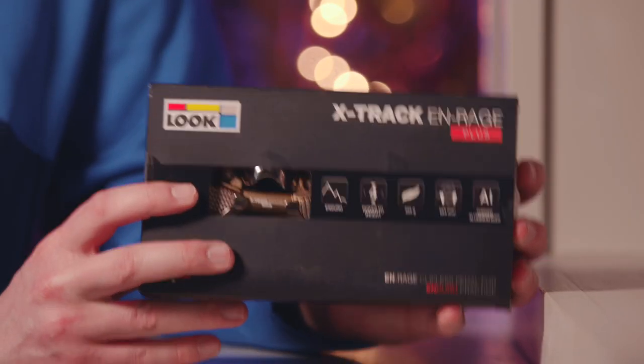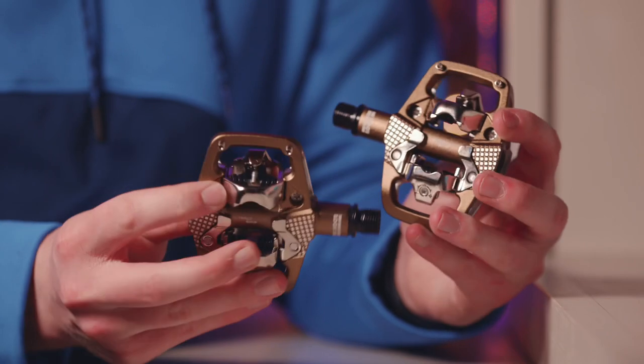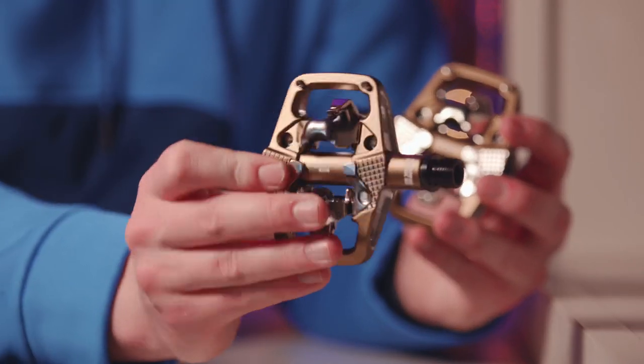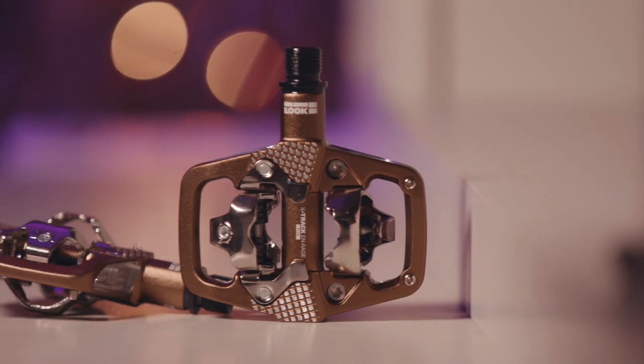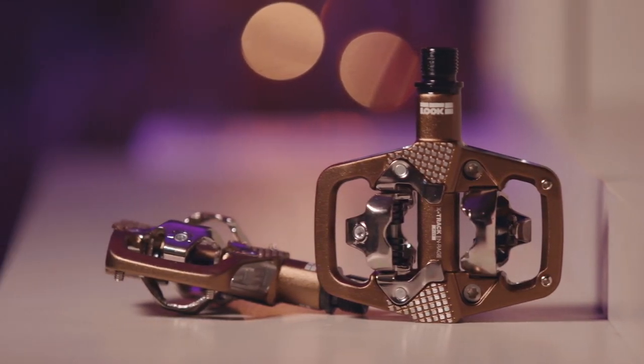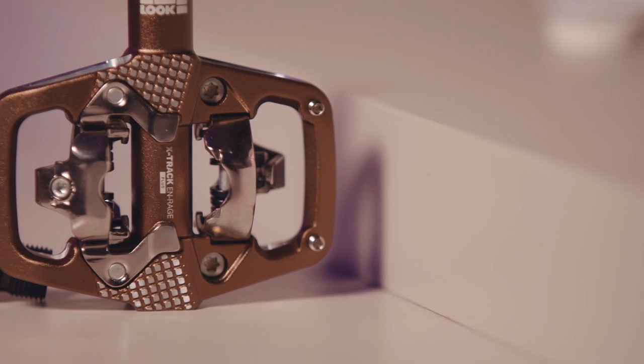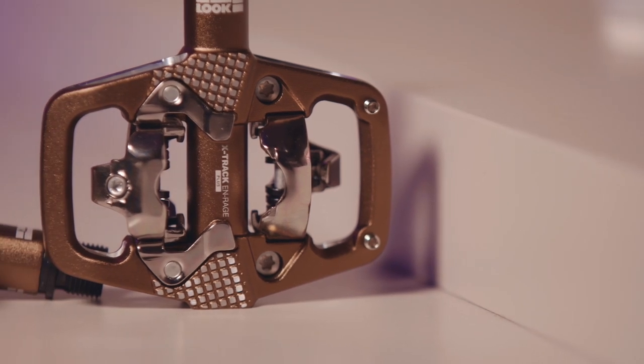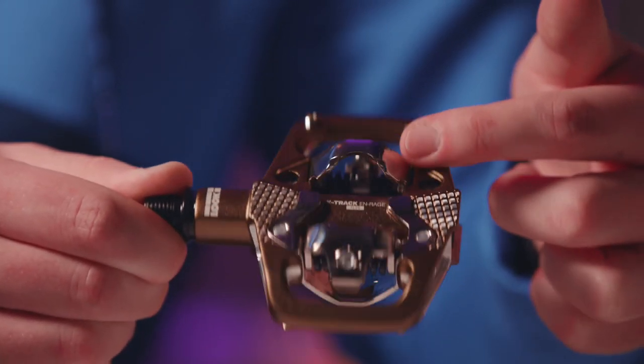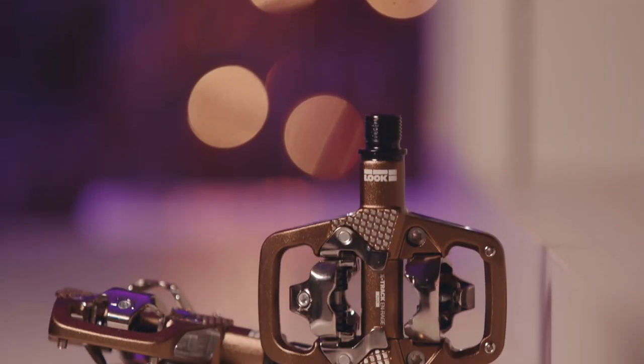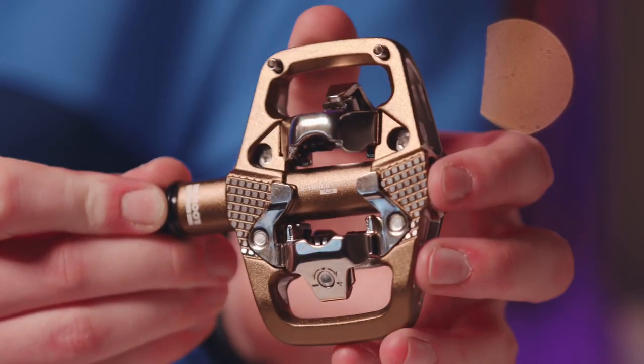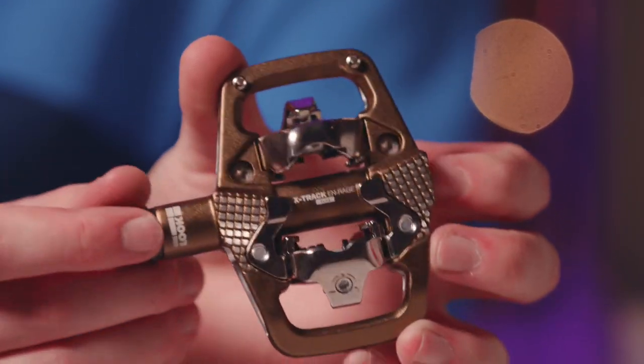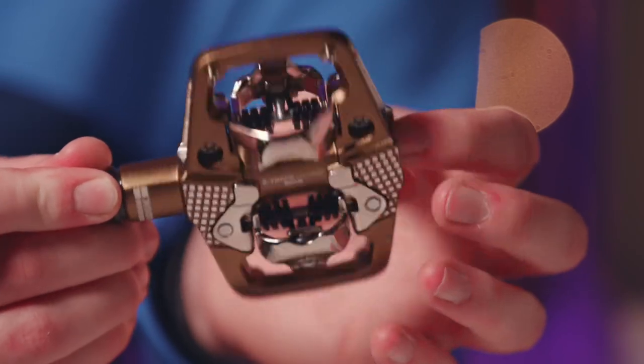With a wide platform for powering through the toughest of trails, the Look X-Track Enrage Plus pedals offer a comfortable and confident clipped-in experience as you take on your ride. Made using a sturdy forged aluminum body and a smooth-spinning chromo spindle, these pedals are dependably durable and tough. They come with their own cleats for precision engagement and have pins in to grip into if you become disengaged at any point.